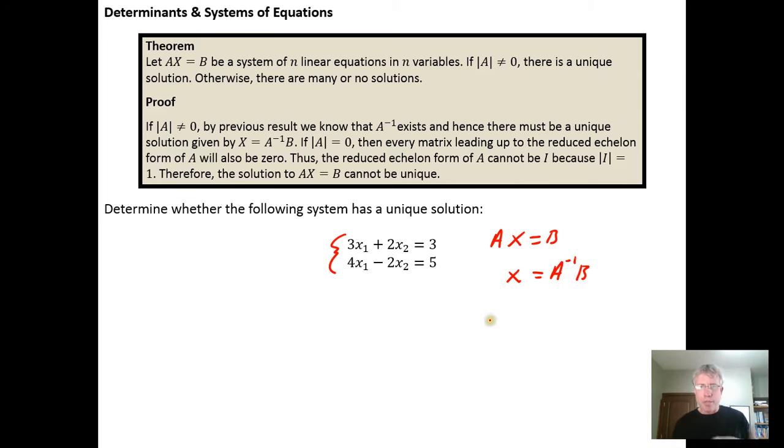The formula that we just came up with, A inverse equals 1 over the determinant of A times the adjoint matrix for A, gives us a tool. This theorem is another corollary from the proof of this formula. What this formula does is give us another way to identify whether we have a unique solution for a system of equations, because if A inverse exists then we get this unique solution. But this inverse only exists when this determinant isn't equal to zero.